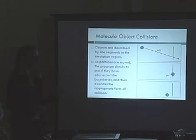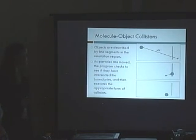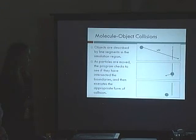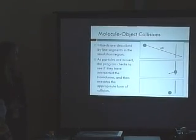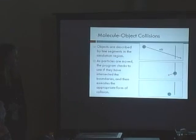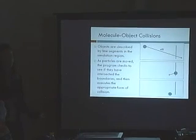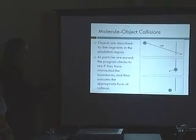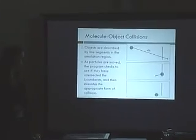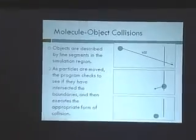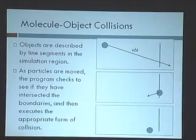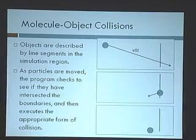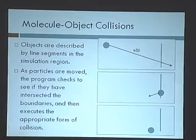When we perform molecule-object collisions, we project the trajectory of the molecule, and if we find it intersects one of the boundaries we've set up, we go back to where the collision happened and pick the appropriate method for the next velocity. If there was another barrier, we would continue this process until we've completed the time step and the particle has moved for its entire time.